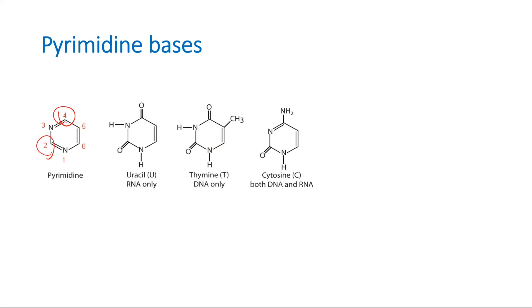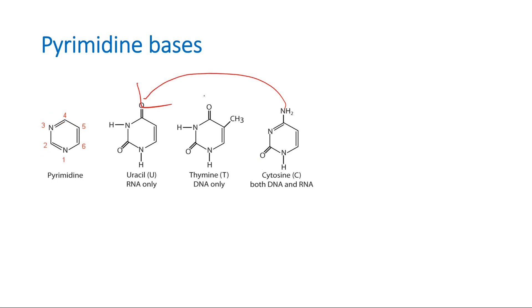Cytosine is 2-oxo-4-aminopyrimidine. You can also think of it this way: deamination of cytosine produces uracil. We have discussed this in the nucleic acids video — deamination of cytosine and methylation of uracil.